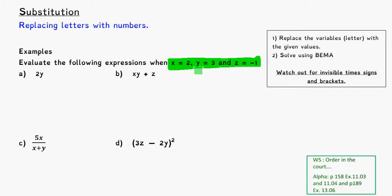What happens if that's true? So what we need to do is our first step, replace the variable or the letter with the given value. So in this first example, I see that they're telling me that x is equal to 2, y is equal to 3, z is equal to negative 1. So here I see 2y, so that means y has to be 3.